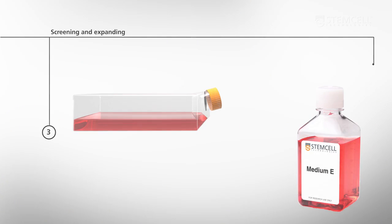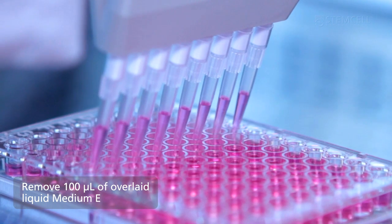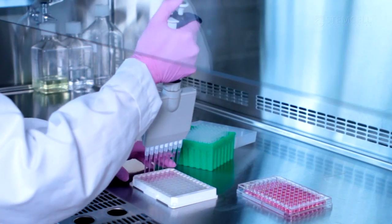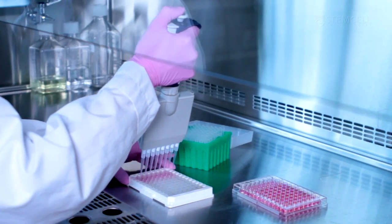Screening and expanding: Carefully remove 100 microliters of overlaid liquid medium E, leaving the remainder so as to not disturb colonies. Test the supernatants for specific antibodies using the appropriate assay.